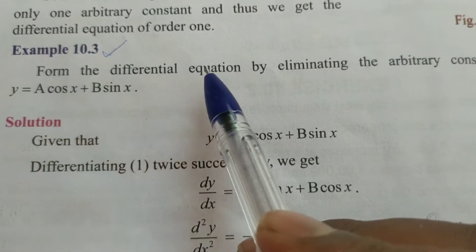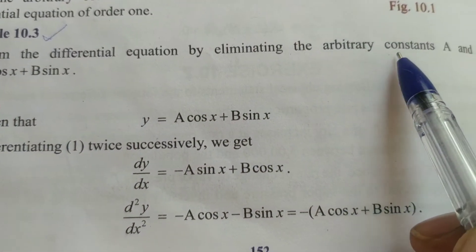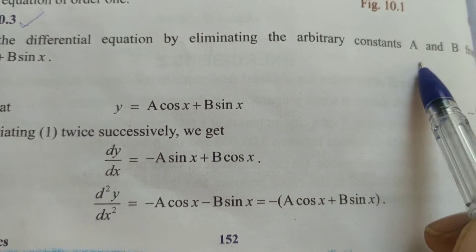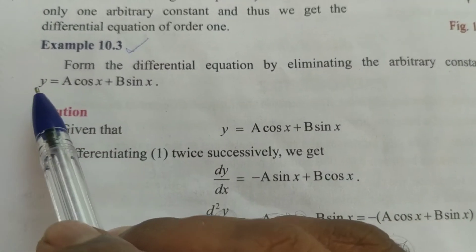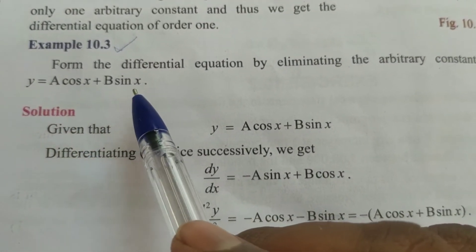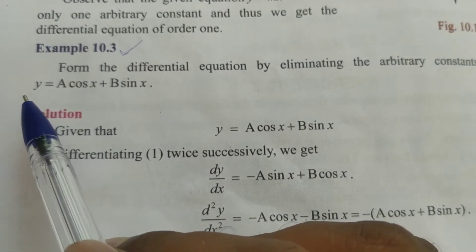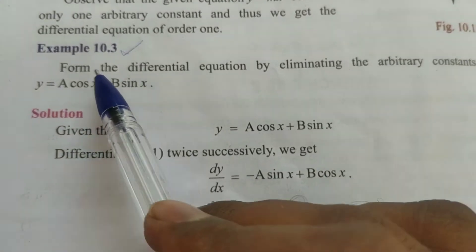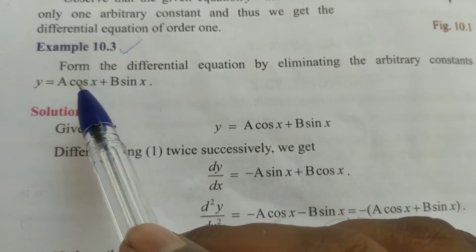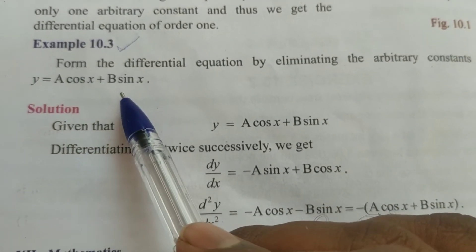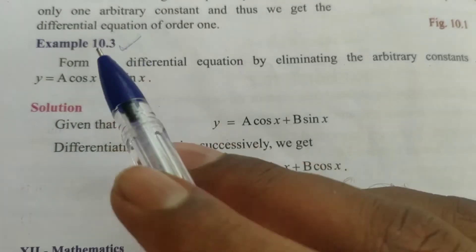Form the differential equation by eliminating the arbitrary constants a and b from y equal to a cos x plus b sin x. A and b are arbitrary constants, and we need to eliminate them.